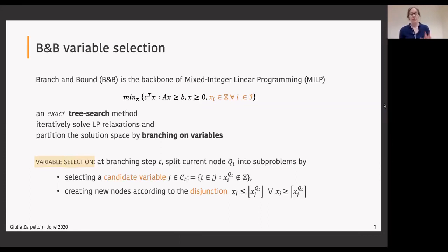We look at the set of variables that are candidates for branching at that node, the set of variables that are required to be integer but were assuming a fractional value at the relaxed solution. We select a variable from the set of candidates following some branching criterion, and then we create two new child nodes according to a disjunction on the value of this variable.